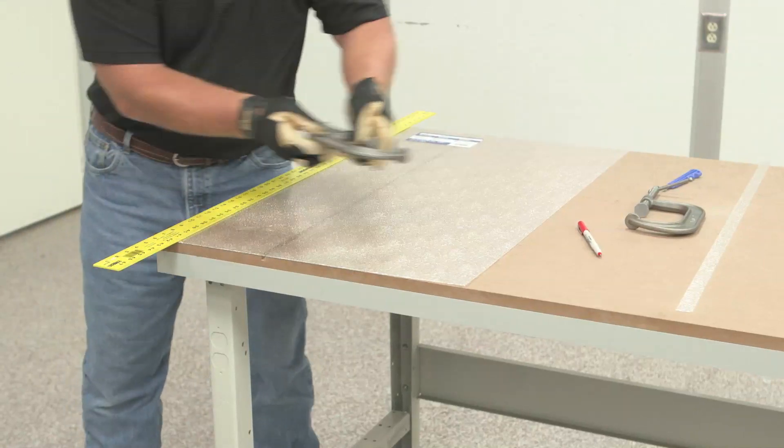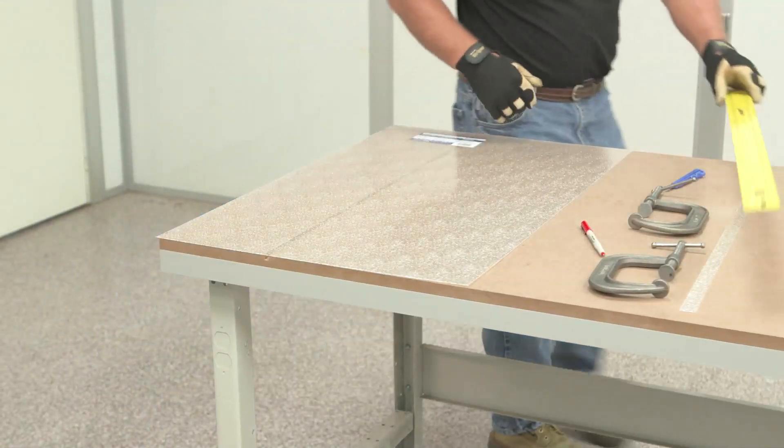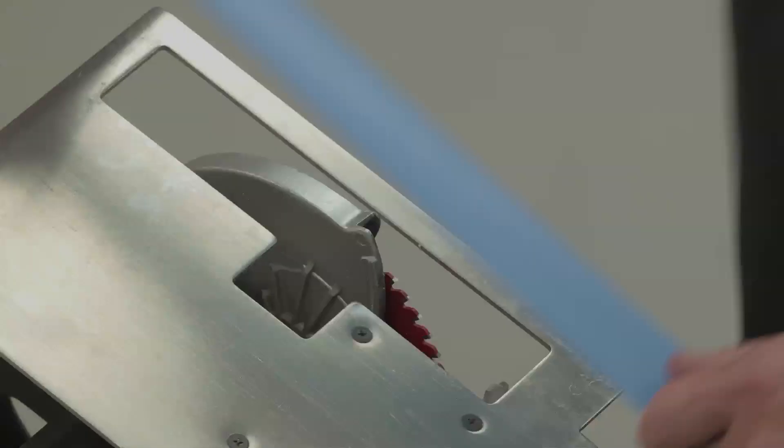Once the panel is scored, turn it over, replace the straight edge along the score line, and pull up to snap off the trimmed portion.